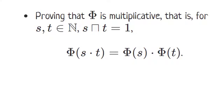Recall that we are attempting to prove that phi is multiplicative. In other words, for relatively prime natural numbers s and t, phi of s times t is equal to phi of s times phi of t.